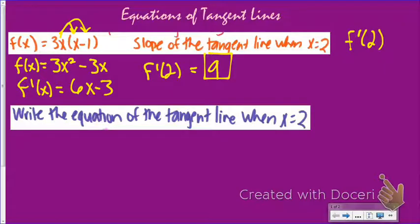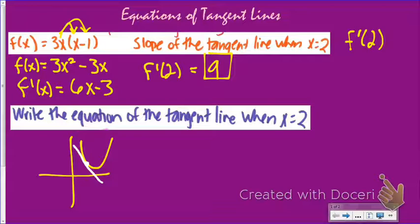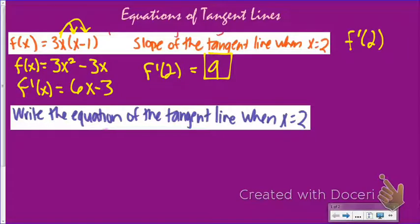Now I want to write the equation of that tangent line. When x equals 2, my graph — some sort of a parabola — has a point on it. What I'm trying to do is write the equation of that line. I've already found the slope. What you learned back in Algebra 1 is that to write the equation of a line, you need more than just the slope — you also need a point on the graph. With a point and slope, you can use the point-slope formula.